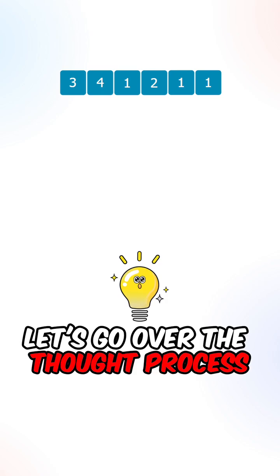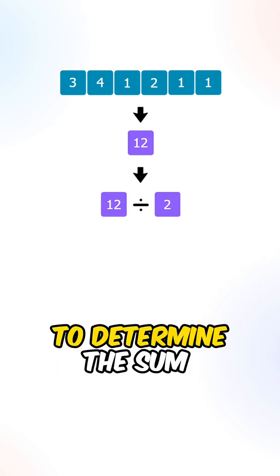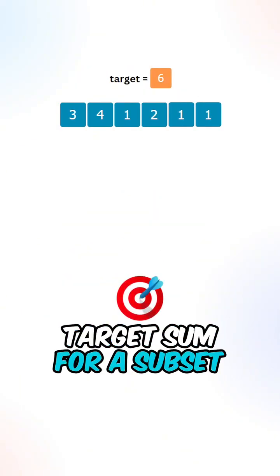Let's go over the thought process. What we can do is calculate the sum of all the elements, then divide it by 2 to determine the sum of a subset. Now after finding the target sum for a subset...